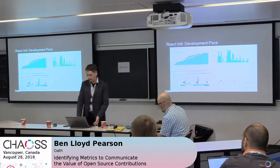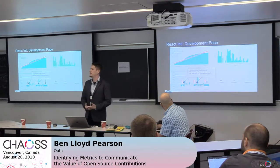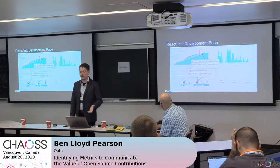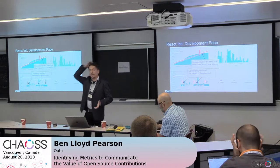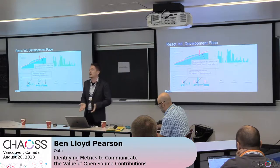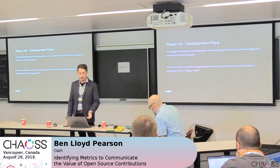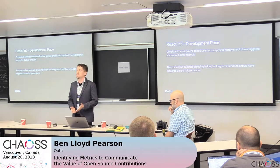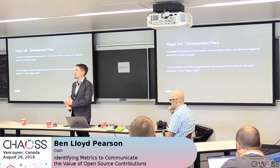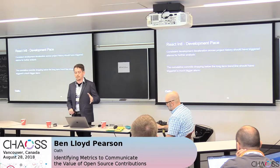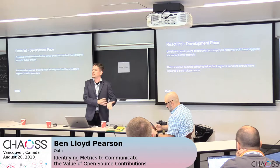Now let's look at React. There were multiple persistent periods of deceleration throughout its history. Eventually it crossed below the trend line after spending more than a year above it. In fact, you can see the project pretty much died right at that trend line. What can we learn? This project had consistent development deceleration — each one of those periods should trigger some sort of alarm for further analysis. Additionally, the cumulative commits dropping below the long-term trend line should trigger a much bigger alarm, because that project should have been on your radar.